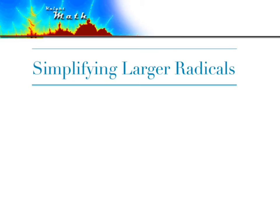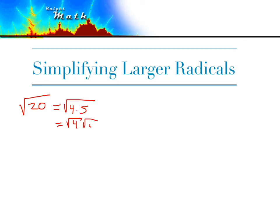So how do we simplify large radicals? You may be familiar with simplifying small radicals. When we have something like the square root of 20, we can notice that's the square root of 4 times 5. Using the radical product rule, that's the square root of 4 times the square root of 5 — we can break it into two radicals — and that's just 2 times the square root of 5.